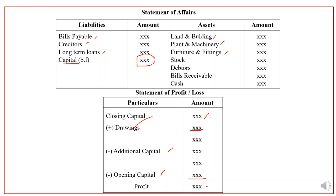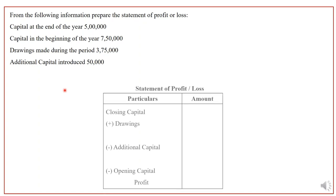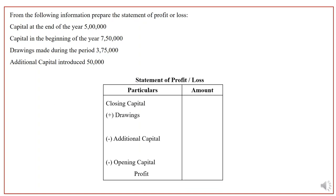This is the first question. From the following information, prepare the statement of profit or loss. Capital at the end of the year is 5 lakhs. Capital at the beginning of the year is 7 lakh 50,000. Drawings made during the year are 3 lakh 75,000. Additional capital introduced is 50,000. Since both opening and closing capital are given, we directly prepare the statement of profit, starting with closing capital of 5 lakhs.